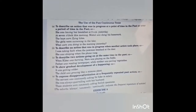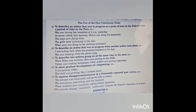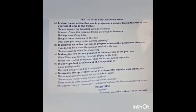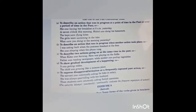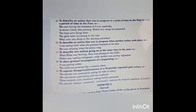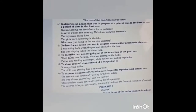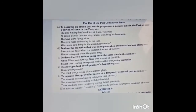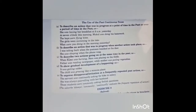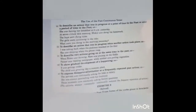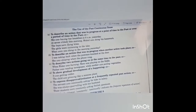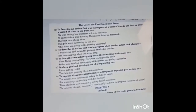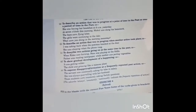The uses of past continuous tense: first, to describe an action that was in progress at a point of time in the past or over a period of time in the past. Example: she was having breakfast at 8 a.m. yesterday. At 8 o'clock this morning, Mukul was doing his homework. Second, to describe an action that was in progress when another action took place. Example: I was taking a bath when the postman knocked at the door. She was sleeping when the phone rang.